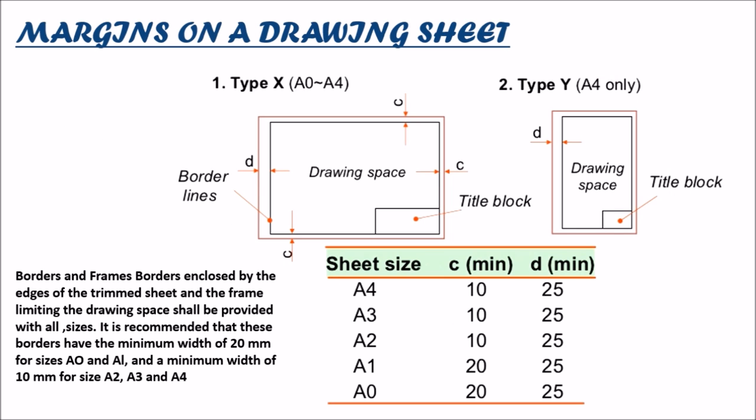Now if we consider the margins on a drawing sheet, the left hand side margin is always greater than the upper, bottom and the right hand side margin irrespective of the orientation of the sheet. The sheet A0 and A1 have the minimum margin of 20 mm and the maximum of 25 mm whereas in A2, A3 and A4 ISO sheets, the minimum margin reduces up to 10 mm.